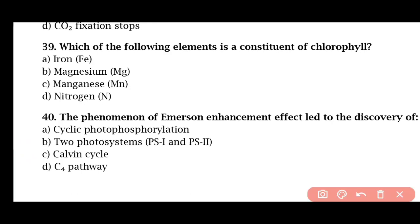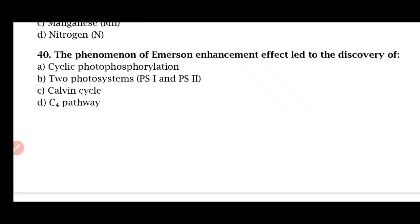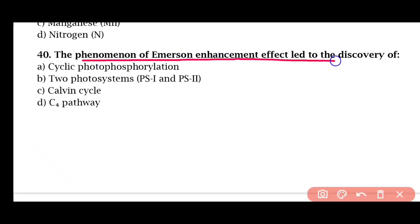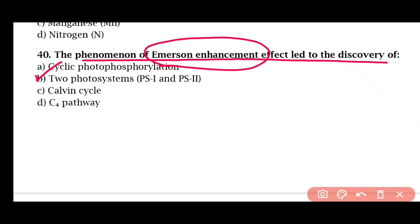Question 39: Which of the following elements is a constituent of chlorophyll? — Iron, magnesium, nitrogen. The correct answer is option B: magnesium. Question 40: The phenomenon of the Emerson enhancement effect led to the discovery of — cyclic phosphorylation, two photosystems (PS1 and PS2), the Calvin cycle, or the C4 pathway. The correct answer is option B. Photosystem 1 and Photosystem 2 were discovered through the Emerson enhancement effect.